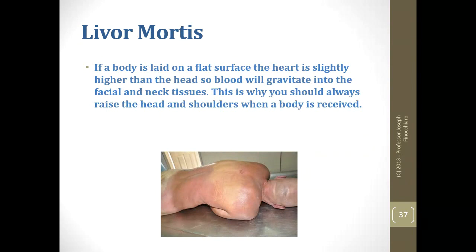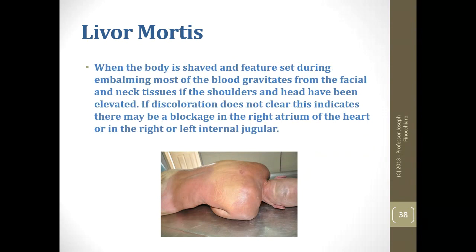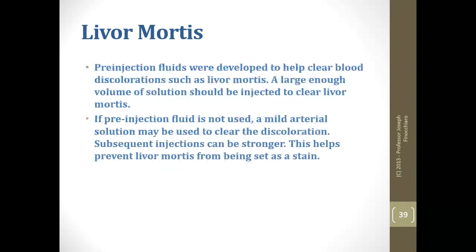If a body is laid on a flat surface, the heart is slightly higher than the head, so blood gravitates into the facial areas. You want to raise the head with the shoulders up to force blood to remain in the upper thorax rather than pooling in the head. When the body's shape and features are set during embalming, most blood gravitates back down, which can also lead to dehydration issues if raised too high. If this discoloration does not clear, there is probably a blockage in the right atrium or the internal jugular.